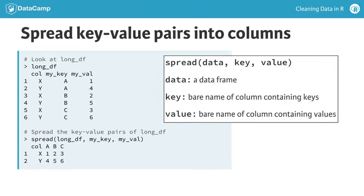The first argument to spread is the name of the data set, longdf. The second argument is the name of the keys column, myKey. And the third argument is the name of the values column. In this case, myVal. You can see that the result is the original wide data set, which we referred to as wideDF in the previous example.